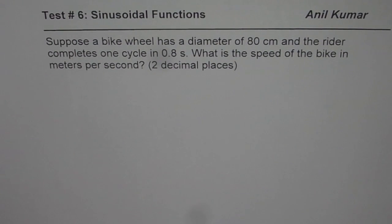Suppose a bike wheel has a diameter of 80 cm and the rider completes one cycle in 0.8 seconds. What is the speed of the bike in meters per second to two decimal places?